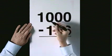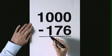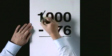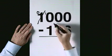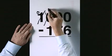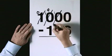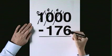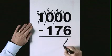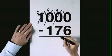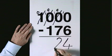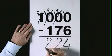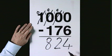1,000 subtract 176. Exchange. Exchange. Exchange. 10 take 6 is 4. 9 take 7 is 2. 9 take 1 is 8. The answer is 824.